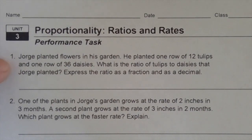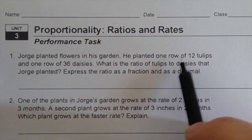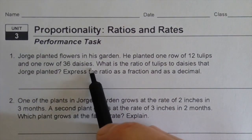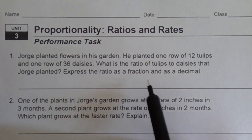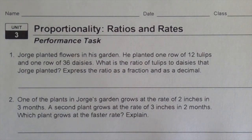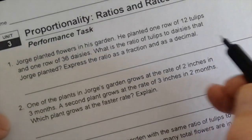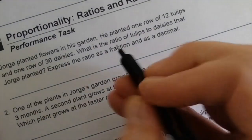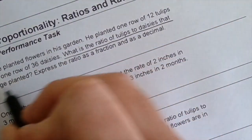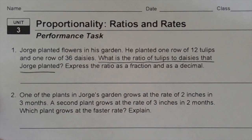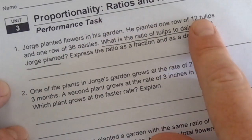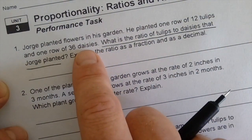Number one: Jorge planted flowers in his garden. He planted one row of 12 tulips and one row of 36 daisies. What is the ratio of tulips to daisies that Jorge planted? Express the ratio as a fraction and as a decimal. The first thing I notice about this problem is the question — they want us to figure out a ratio of tulips to daisies. The order is extremely important: tulips first, then daisies. So we begin with 12 tulips and 36 daisies.